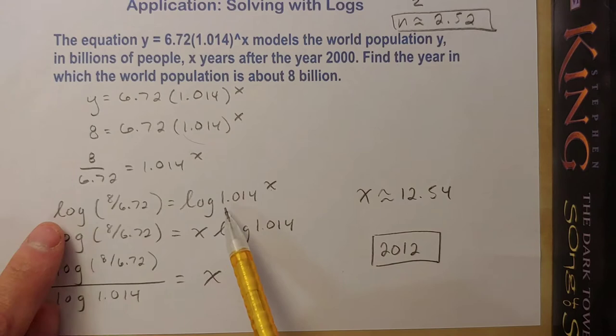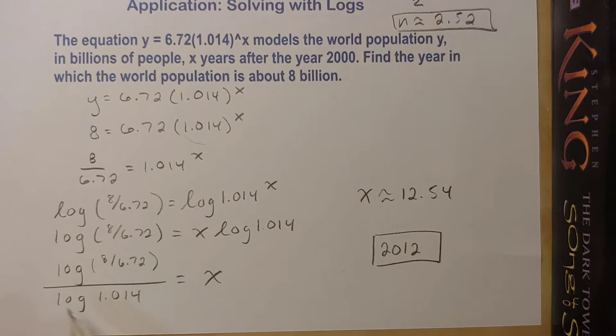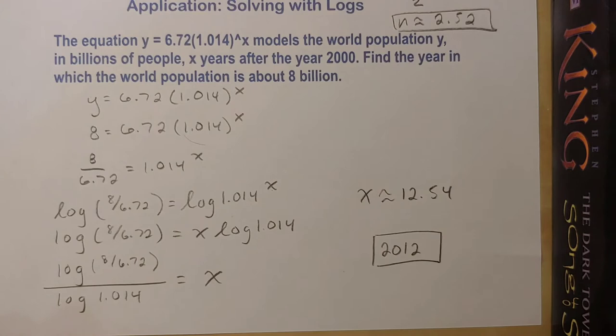Once I've isolated that term, now I can take the log of both sides, and that allows me to use the power rule and pull the x down. I'm dividing both sides by log of 1.014, and we get my final answer here. This would be my exact solution. Typing that into my calculator, I got about 12.54.